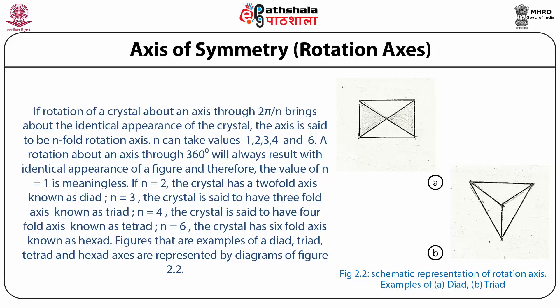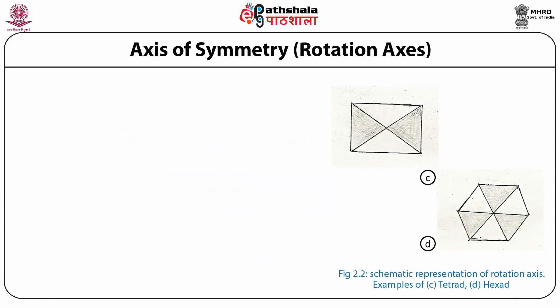If n equals 2, the crystal has a two-fold axis known as diad. If n equals 3, the crystal is said to have a three-fold axis known as triad. If n equals 4, the crystal has a four-fold axis known as tetrad. If n equals 6, the crystal has a six-fold axis known as hexad. Figures that are examples of a diad, triad, tetrad and hexad axis are represented in the diagrams of figure 2.2, which is a schematic representation of rotation axes: A diad, B triad, C tetrad and D hexad.